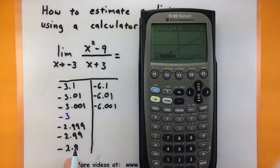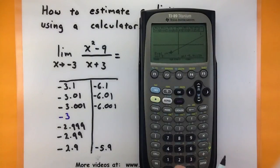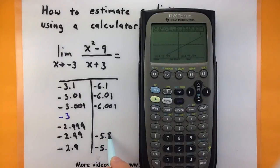So F5, value, I'll start with my negative 2.9. So this is at negative 5.9. F5, value, negative 2.99, negative 5.99.